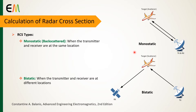In general, there are two RCS types: monostatic and bistatic. When the transmitter and receiver are at the same location, as shown in this figure, the RCS is referred to as monostatic or backscatter. It is referred to as bistatic when the two are at different locations.